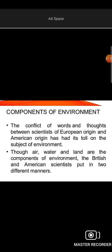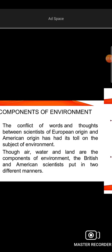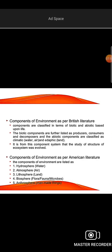There is an American classification and a British classification. The American classification is called biotic and abiotic. The components in the American classification are: Hydrosphere, Atmosphere, Lithosphere, Biosphere, and Androsphere.